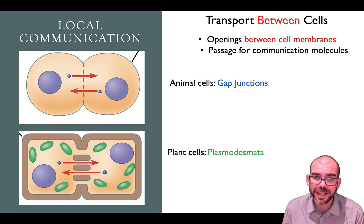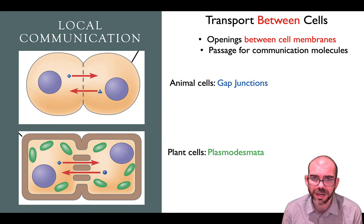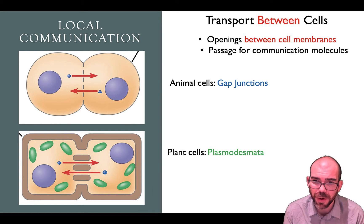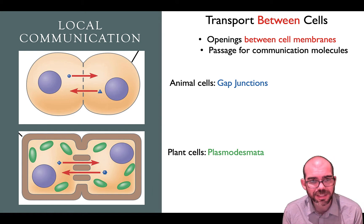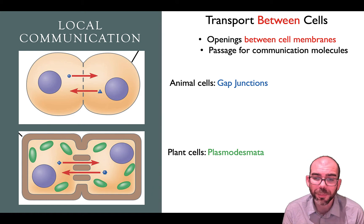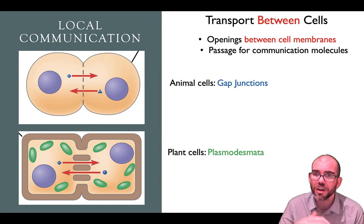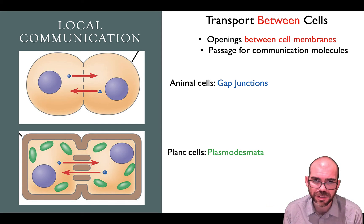In plant cells, they have the same thing — small openings between neighboring cells — but instead of calling them gap junctions, we call them plasmodesmata. In plant cells, we need openings in the cell wall, so there's an added level of sophistication for quick transport between these passages.